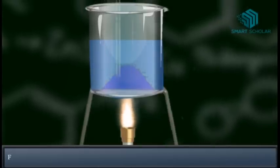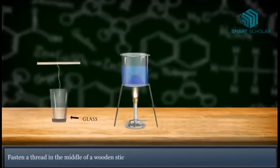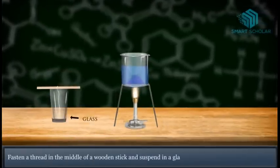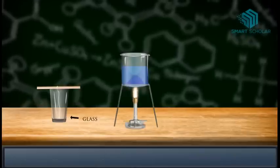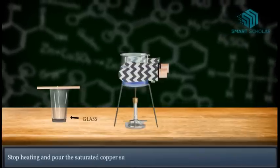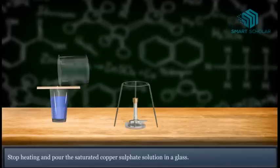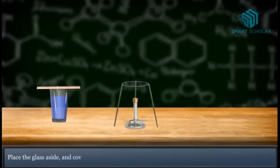Fasten a thread in the middle of a wooden stick and suspend in a glass. Stop heating and pour the saturated copper sulfate solution in a glass. Place the glass aside and cover the beaker with the cardboard.